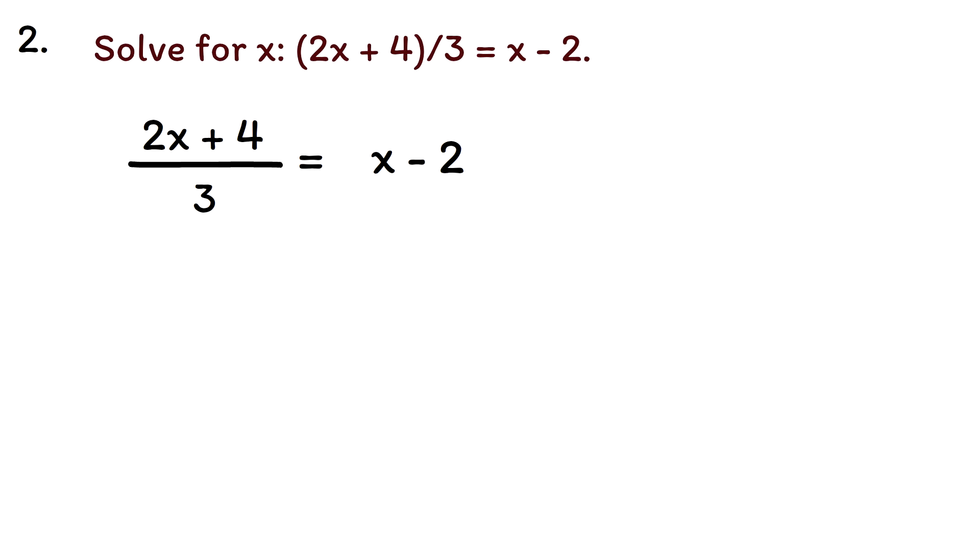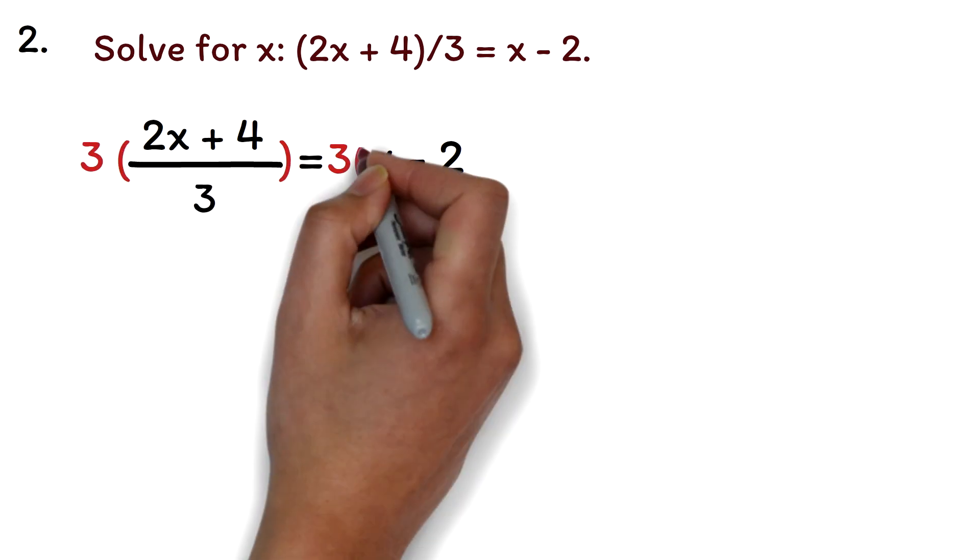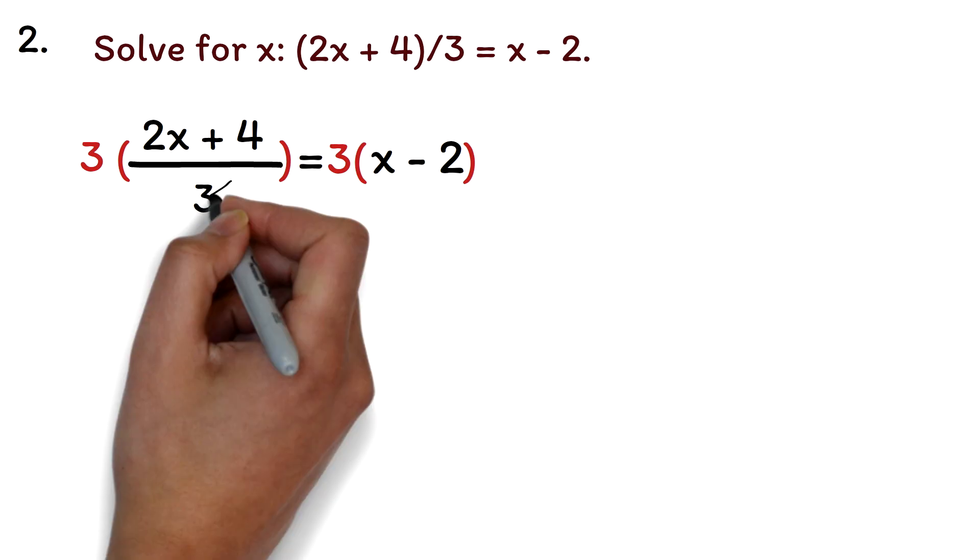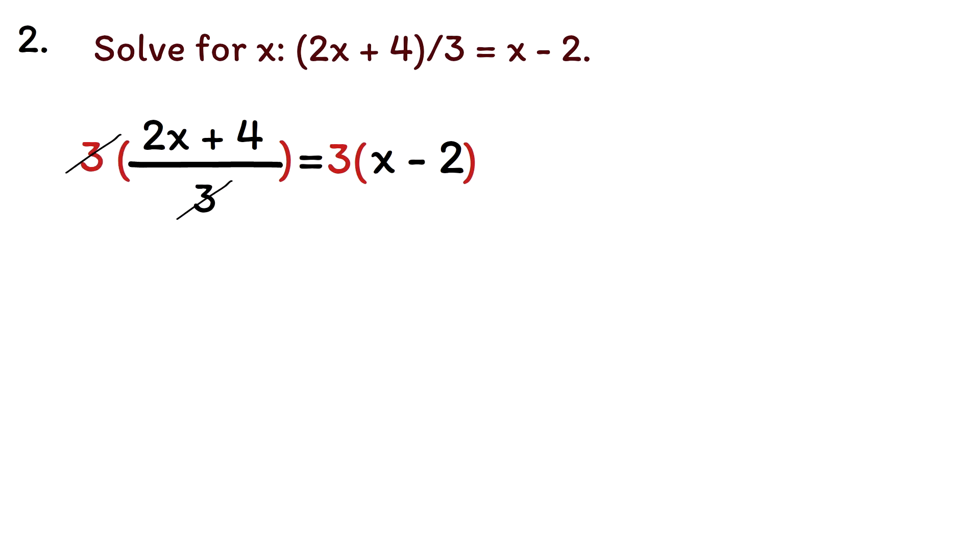Let's start by getting rid of the fraction on the left side. To do this, we can multiply both sides of the equation by 3. The 3 will cancel out.